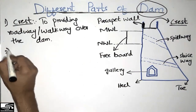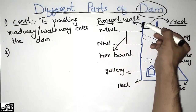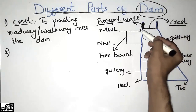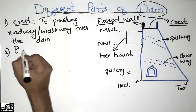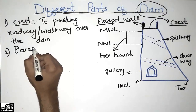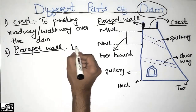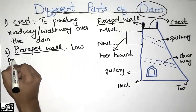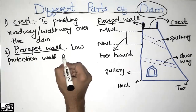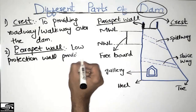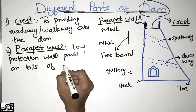The second part of the dam is the parapet wall. Parapet walls are low protective walls provided on both sides of the crest for the protection of the crest.